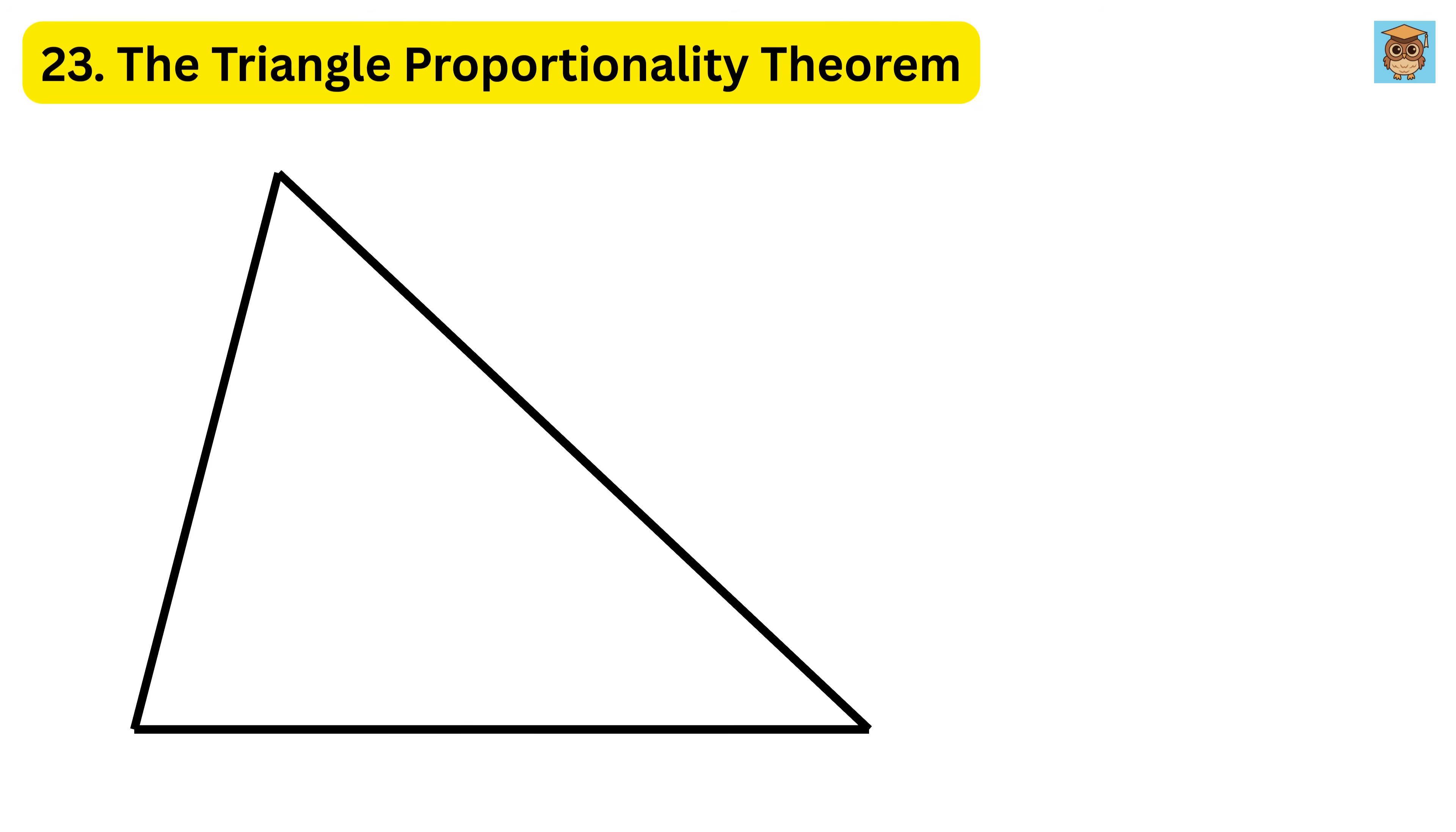For example, imagine a triangle where two sides measure 6 centimeters and 9 centimeters. A parallel line is drawn, cutting the 6 centimeter side into two segments, 2 centimeters and 4 centimeters. Since the line is parallel to the third side, it must cut the 9 centimeter side in the same ratio. This means the parallel line divides the 9 centimeter side into 3 centimeters and 6 centimeters, because 3 to 6 is also 1 to 2.